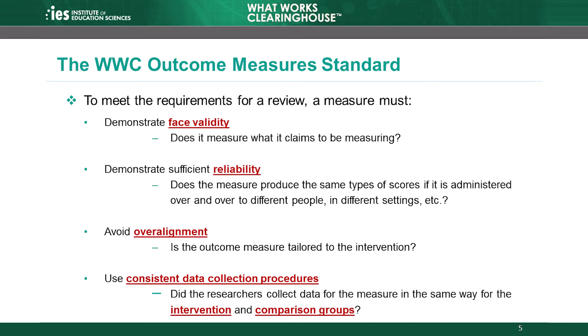Let's start with an overview of the outcome measure requirements, which we will discuss in more detail throughout the module. First, the outcome measure must have face validity — that is, it must measure what it claims to be measuring. Second, the measure must have sufficient reliability — that is, it must produce the same types of scores if it is administered over and over to different people, in different settings, and so on.